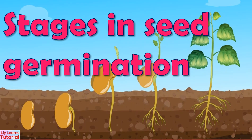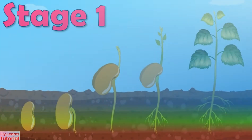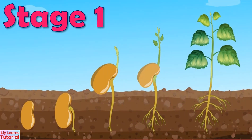Let's look at the stages in seed germination. Stage 1: This is the seed that is sown in the soil.